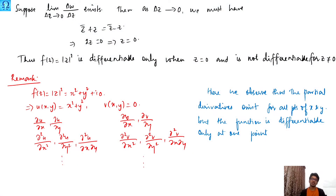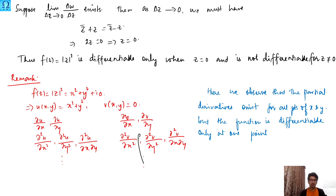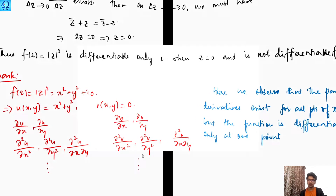In the previous lecture we concluded by observing that the partial derivatives of certain functions exist whereas the function is not differentiable at all points. We have seen an example and this is what we observed.